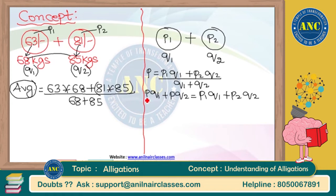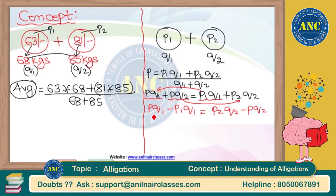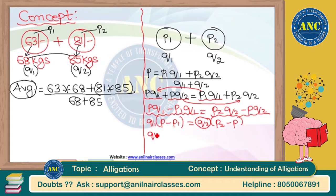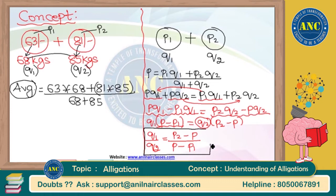Rearranging: PQ1 − P1·Q1 = P2·Q2 − PQ2. Taking Q1 common on the left: Q1(P − P1). Taking Q2 common on the right: Q2(P2 − P). Shifting gives Q1/Q2 = (P2 − P) / (P − P1). This is the very important result: Q1 by Q2 equals highest minus average divided by average minus lowest, where Q1 and Q2 are the two quantities respectively.